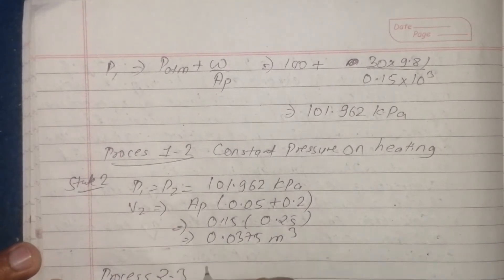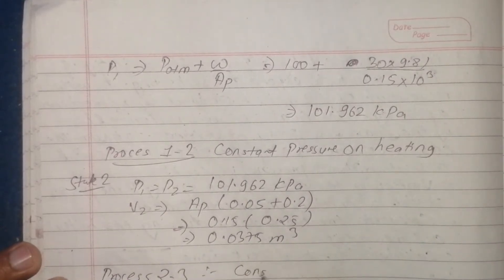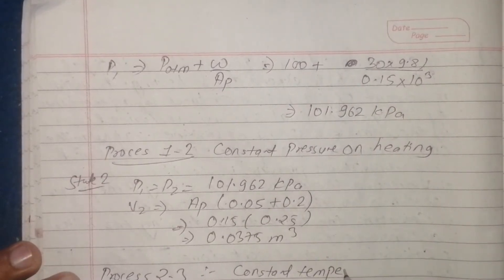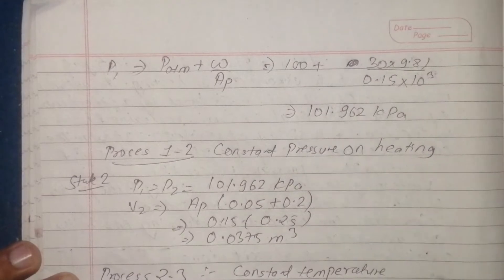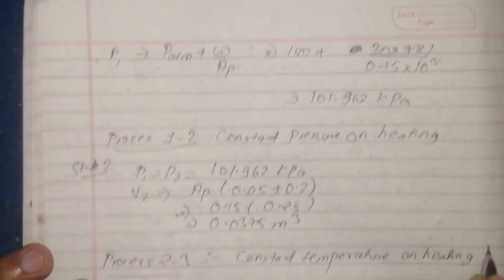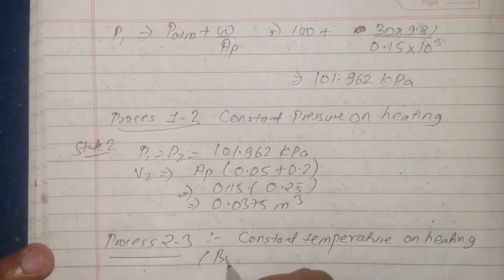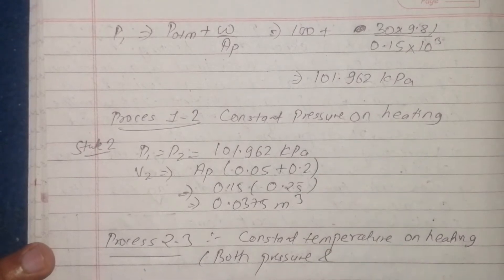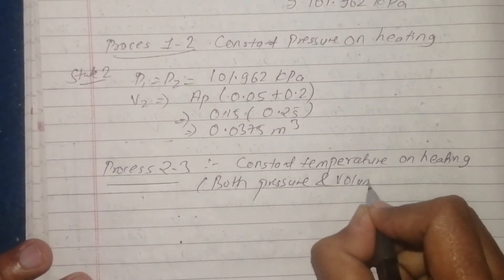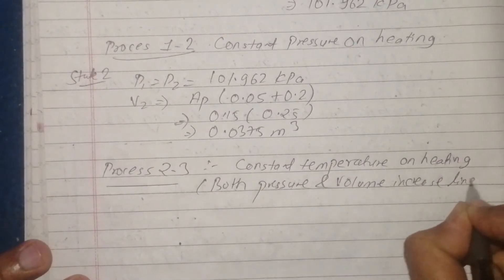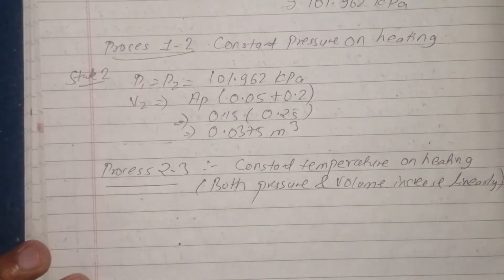Process 1 to 2 occurs at constant pressure. Process 2 to 3: both pressure and volume increase linearly as the spring comes into contact with the piston.